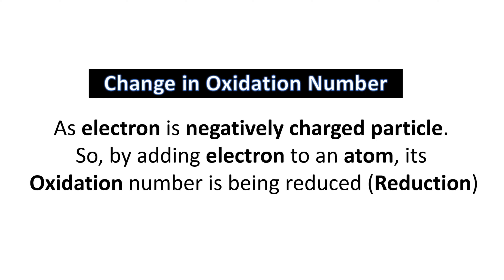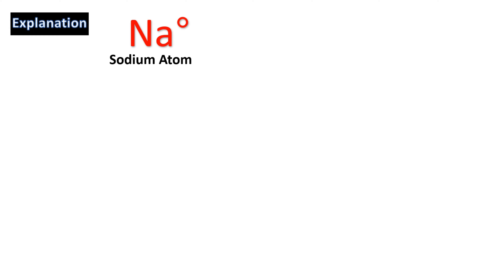Since electrons are negatively charged particles, adding an electron to an atom reduces its oxidation number. Students are sometimes confused about why reduction is a gain of electrons. When you add electrons — which are negatively charged — to an atom, the positive oxidation number goes down. The more electrons added, the lower the positive charge. So oxidation is loss of electrons and the positive number increases, while reduction lowers the positive number — that is why it is called reduction.